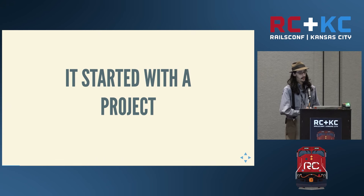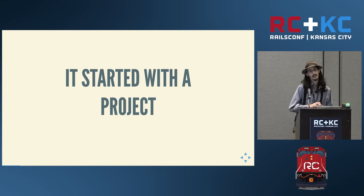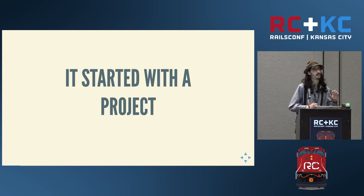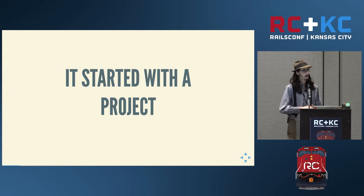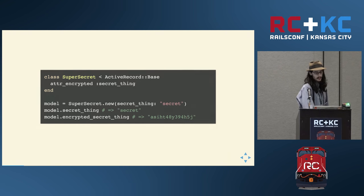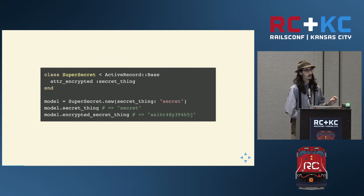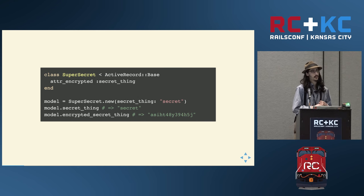There were a lot of things that led up to it, but there was one particular project that really convinced me this was something we needed. It was something I was working on while I was still at Thoughtbot, and the project had the requirement that all data needed to be encrypted at rest — including if our database credentials were leaked, so if you actually had access to the database, you still needed to be unable to read anything. We were using a gem called attr_encrypted to start, and you call attr_encrypted and give it the name of an attribute. It will assume that the database column is called that attribute name underscore encrypted, defines a reader and writer for the unencrypted form, and performs the encryption in Ruby.